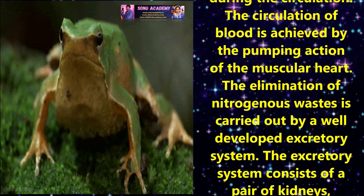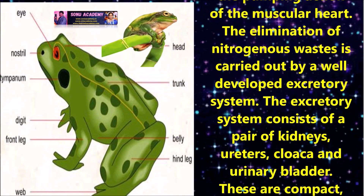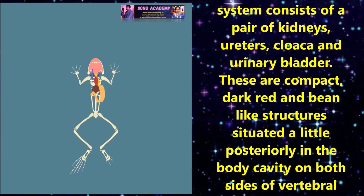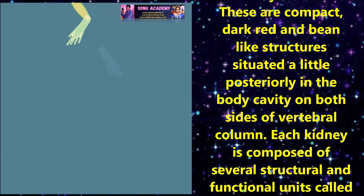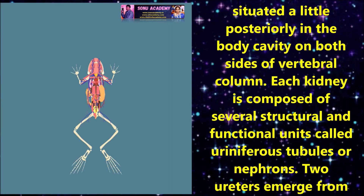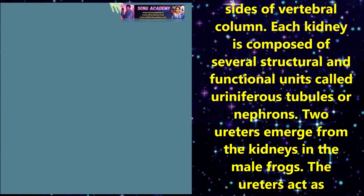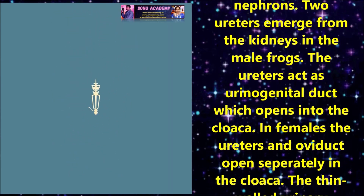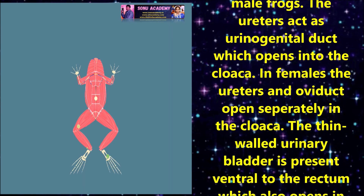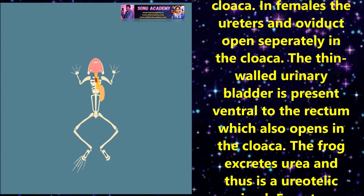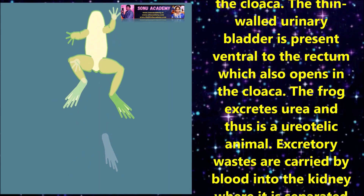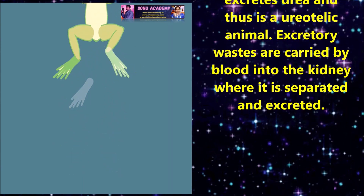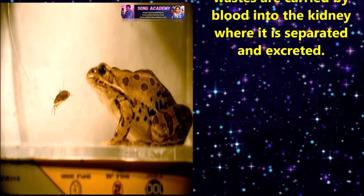The elimination of nitrogenous waste is carried out by a well-developed excretory system. The excretory system consists of a pair of kidneys, ureters, cloaca, and urinary bladder. These are compact, dark red, bean-like structures situated posteriorly in the body cavity on both sides of the vertebral column. Each kidney is composed of several structural and functional units called uriniferous tubules or nephrons. Two ureters emerge from the kidneys. In the male frog, the ureters act as urinogenital ducts which open into the cloaca. In females, the ureters and oviducts open separately into the cloaca. A thin-walled urinary bladder is present ventral to the rectum and also opens into the cloaca. The frog excretes urea and is thus a ureotelic animal. Excretory wastes are carried by the blood into the kidneys where they are separated and excreted.